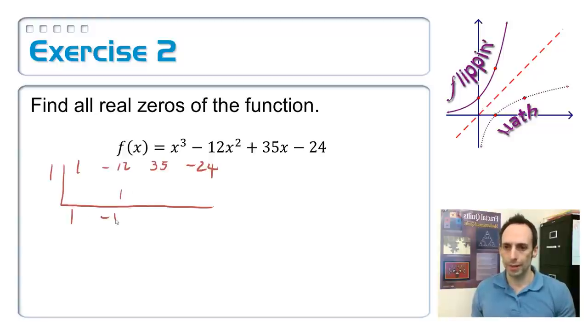1, 1, negative 11, multiply negative 11, add these things, 24, good. And then multiply positive 24, and look at that, it worked. Excellent. So what I'm left with here is a quadratic, x² minus 11x plus 24.